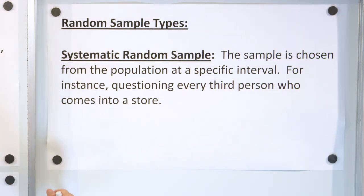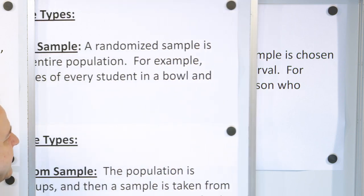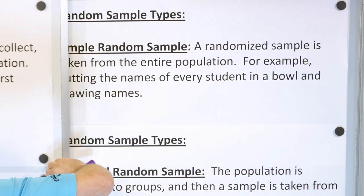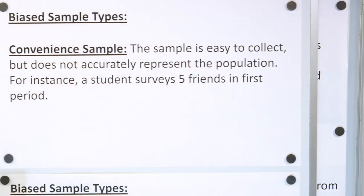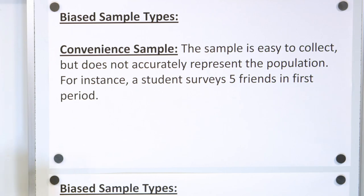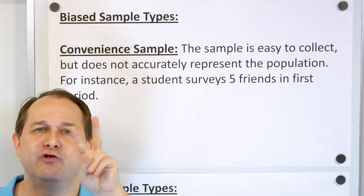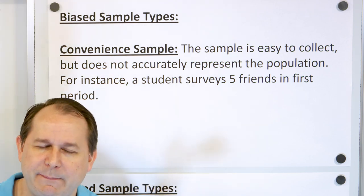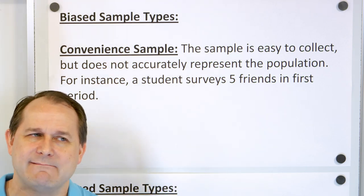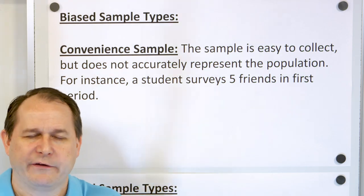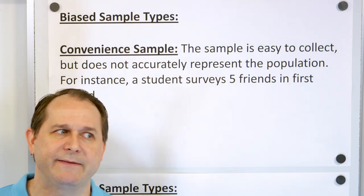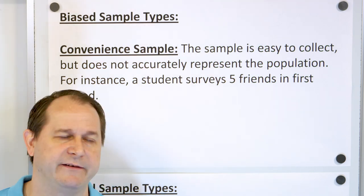Those are the good kinds of samples — random samples. Now let's talk about the bad kinds, called biased samples. We have two kinds of biased samples. Remember, both of them are bad. It's not that one is necessarily worse than the other — they're both bad, and we want to learn about the different kinds of biases we can have.